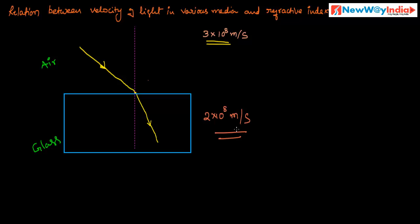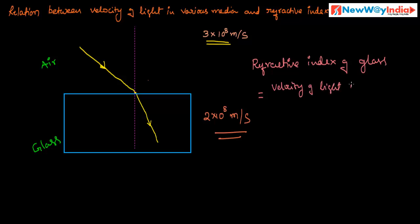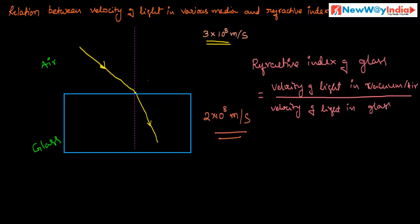Let us look at the relation between the velocity of light in various media and refractive index. The refractive index of glass is equal to the ratio of the velocity of light in the rarer medium — that is vacuum or air — to the velocity of light in glass, the denser medium. This ratio is called the refractive index.